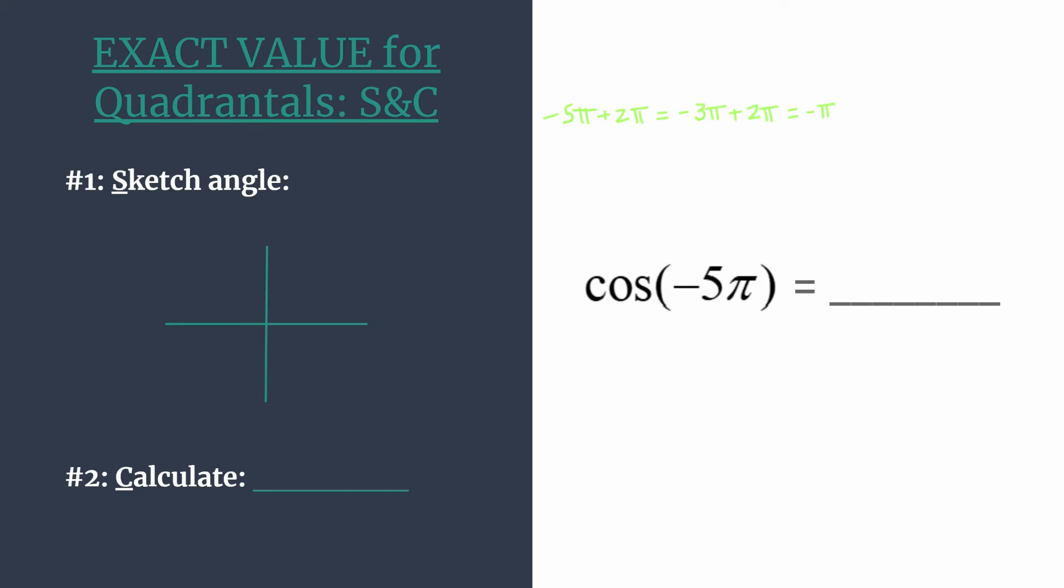Alright, so let's go ahead and sketch that. Remember we're rotating clockwise because of that negative sign in front of our angle. So here's 0, here's negative π over 2, here's negative π. It's a half rotation in the clockwise direction. So let's go ahead and sketch the terminal side. And remember we name this a quadrantal because the terminal side is there on the axis. It's on the negative part of our horizontal axis.